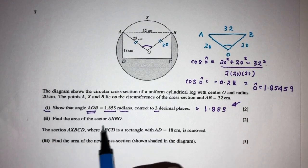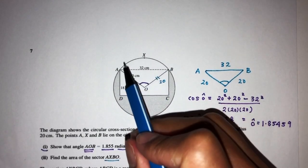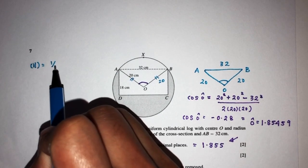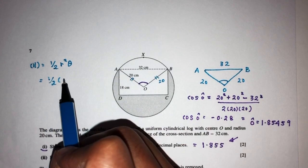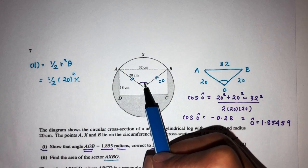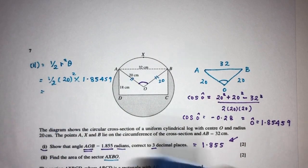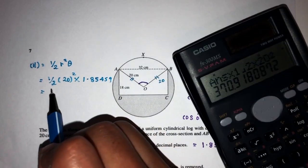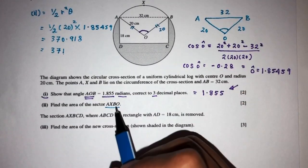For part two, we have to find the area of sector AXBO. The area of a sector is ½r²θ, where θ is the angle in between. So that is ½ times 20 squared times 1.85459, using the exact value. That gives 370.918, and corrected to three significant figures, the area of sector AXBO is 371 centimeters squared.